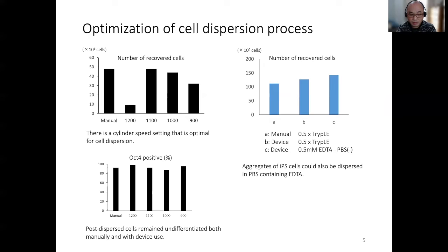The cell dispersion reaction solution had comparable recovery efficiencies for manual and device use with triple replication. On the other hand, PBS containing only EDTA showed the same recovery efficiency.